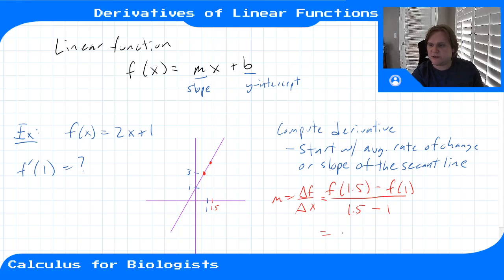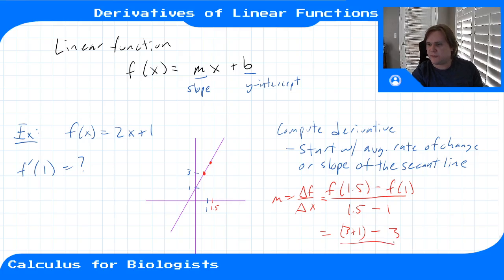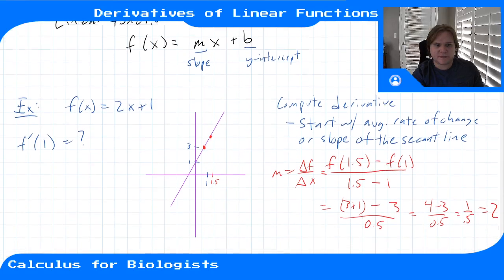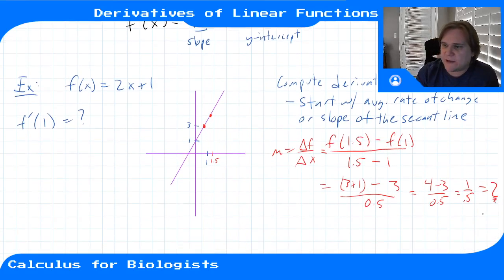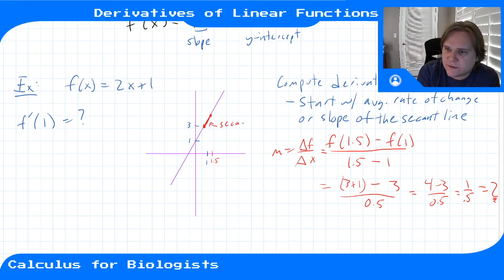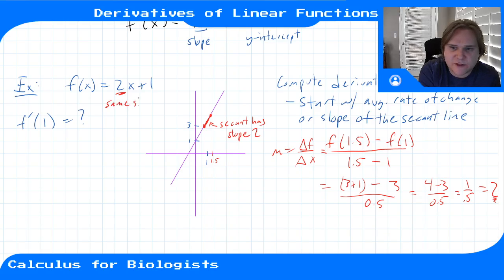So 1.5 times 2 gives us 3, plus 1 gives us 4, minus 3 plus 1, minus 3, plus 0.5 — or 1 over 0.5, which gives us 2. So that would be the slope of the secant line between these two points, a secant slope of 2, which is exactly the same as the slope of our function because it's a linear function. But we're going to do this properly.